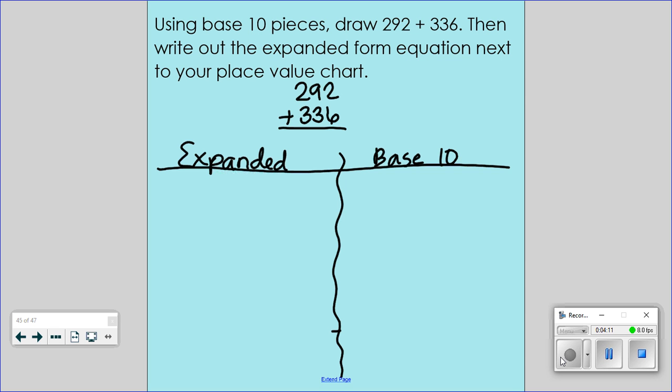Underneath, where we've written this title, I want you to split your page in half vertically. We're going to make a t-chart. The equation that we're going to be looking at is 292 plus 336. Go ahead and write that at the top. On the left side, we're going to be doing it in expanded form. On the right side, we're going to be doing it with base 10 drawings.